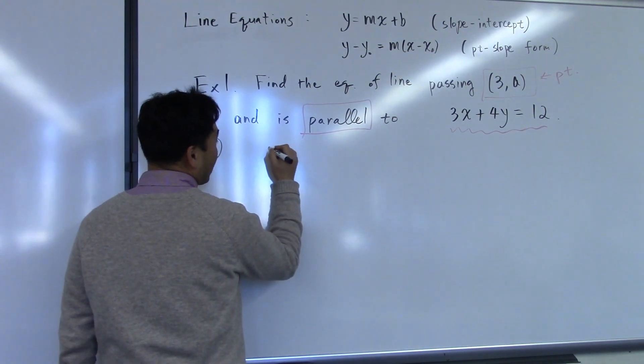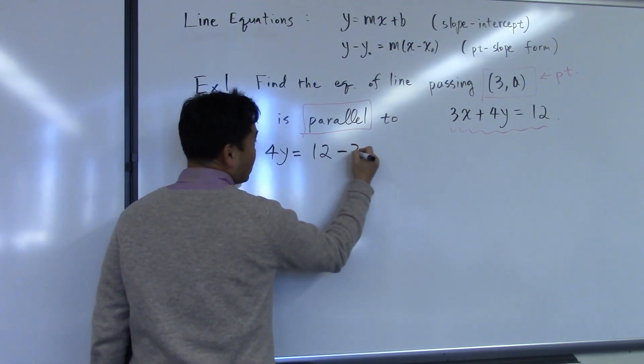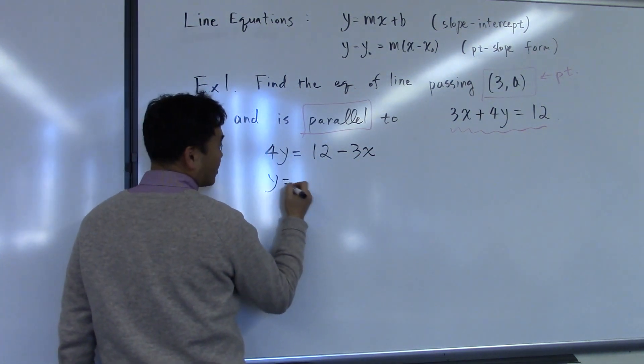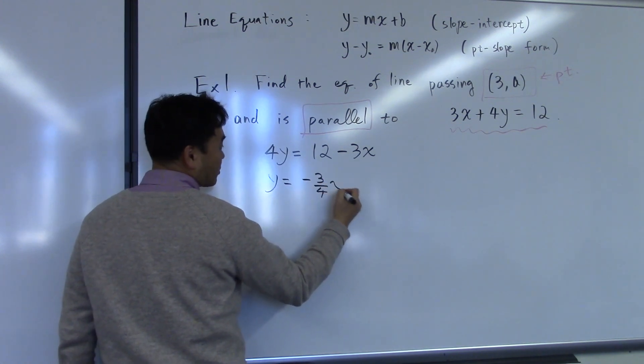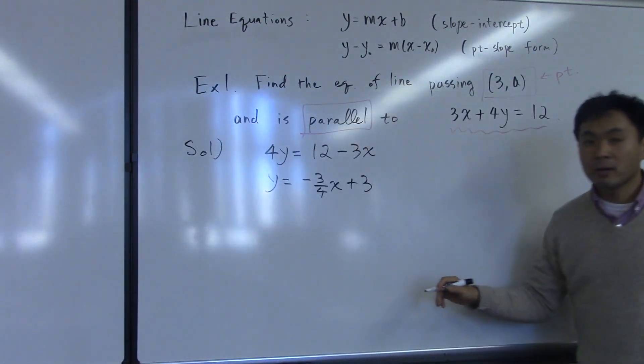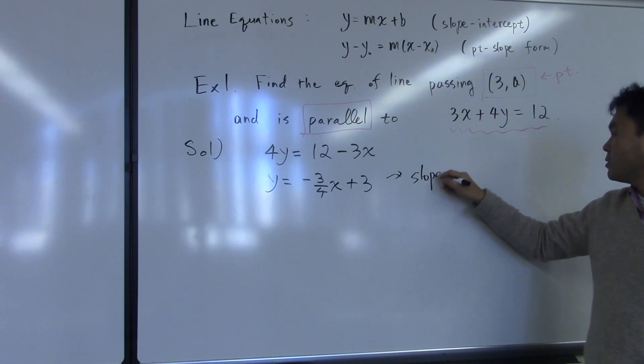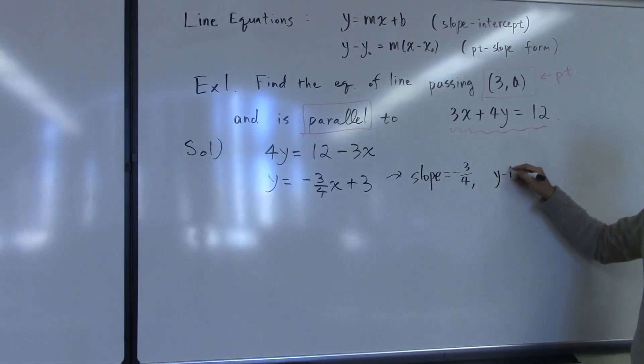We're going to solve for y, leave y on one side, so 3x goes to the other side, divide by 4. Negative 3 divided by 4 is negative 3 over 4x, 12 divided by 4 is 3. So this means slope is equal to negative 3 over 4, and the y-intercept is 3 for this line.